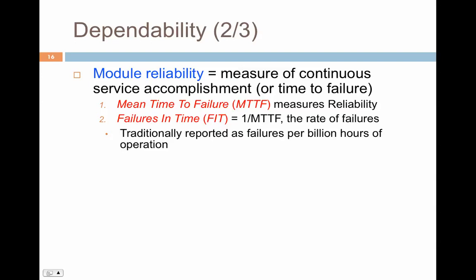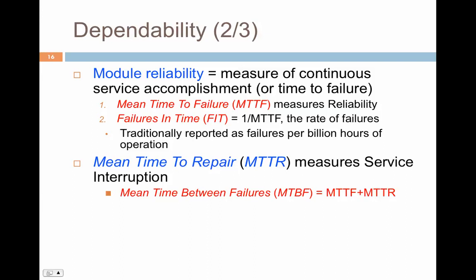We expect systems to operate for billions of hours, and FIT tells us the rate of failure for module reliability. Mean time to repair, MTTR, on the other hand, measures service interruption — how often we are going to interrupt the service. Mean time between failures is MTTF plus MTTR: you have one failure, repair the system, then see another failure. Add the mean time to fail and the mean time to repair, and you get the mean time between failures.